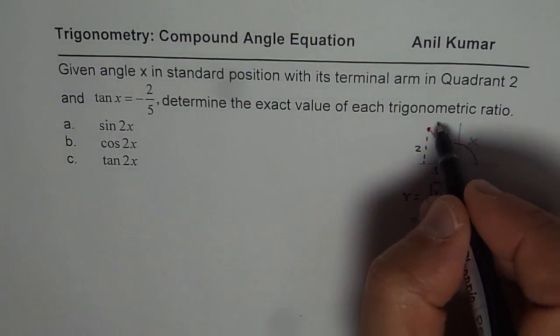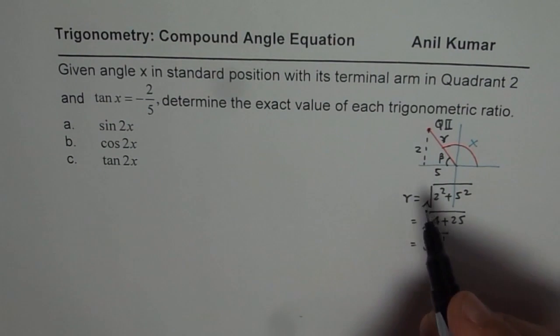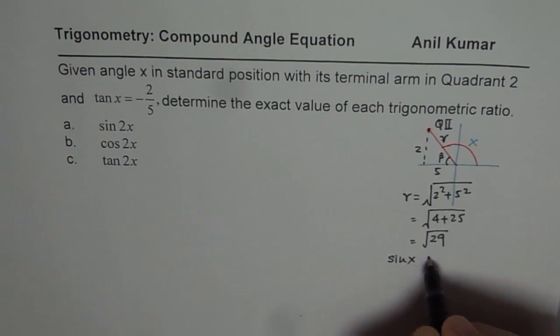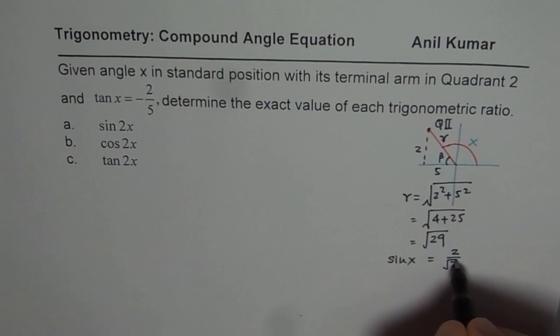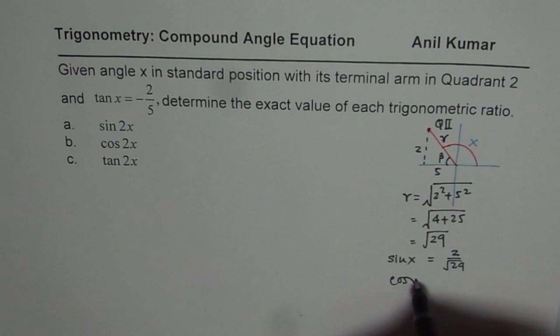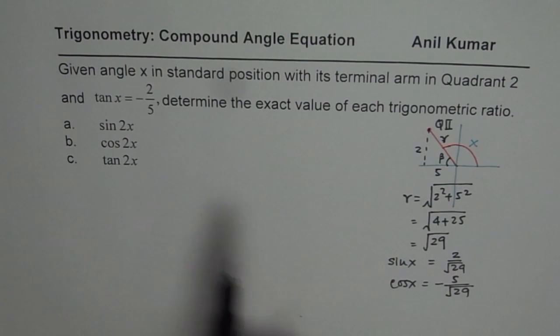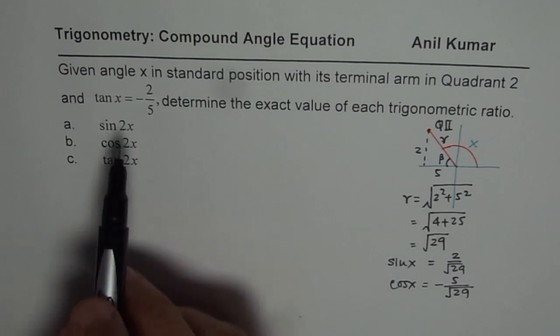We know we are in quadrant 2 and therefore the value of sin is positive. So sin x is positive, it should be equal to 2 over r, so it should be positive 2 over square root of 29. As far as cos x is concerned, cos x should be negative. Adjacent side is 5 over square root of 29. So these are the values to work with. From tan x, we get all these things. Now using these values, you can always evaluate.